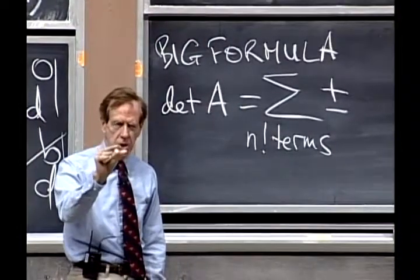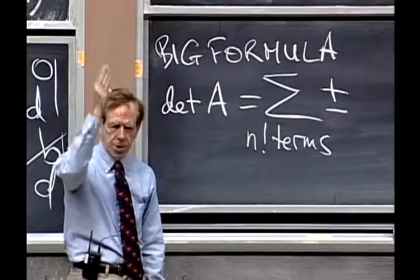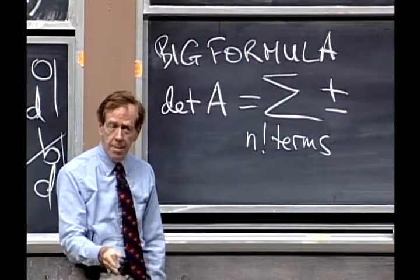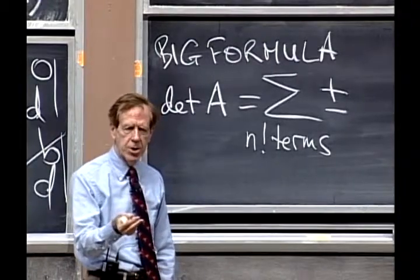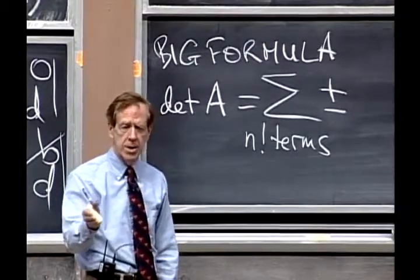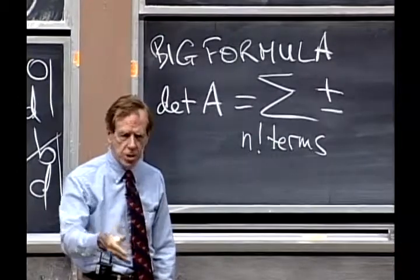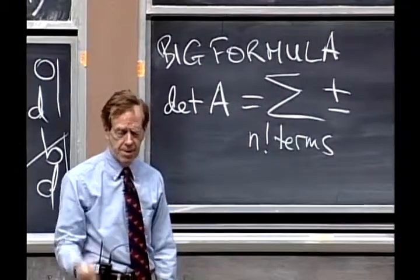And after he's chosen, that's used up that column. So the one in the second row can be chosen n minus one ways. And after she's chosen, that second column has been used.